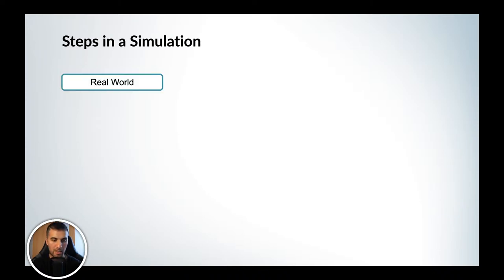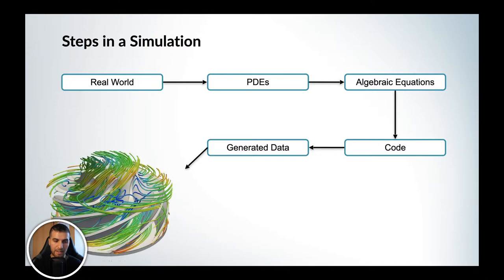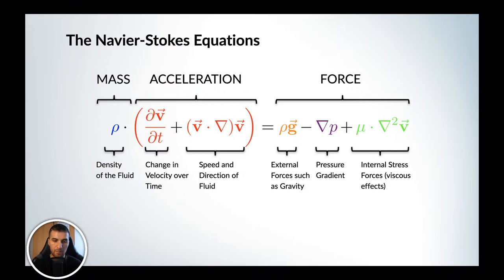To make this easier to grasp: first you have the real-world example, then you transfer it into partial differential equations, then algebraic equations the computer can solve. You put it into code, generate data, and at the end post-process your data to create colorful pictures. Just as an example, here are the Navier-Stokes equations — in principle very easy, basically saying mass times acceleration equals force, which is nothing else than Newton's second law of motion. You can see how the Navier-Stokes equations consist of density of the fluid, change in velocity over time, and so on.